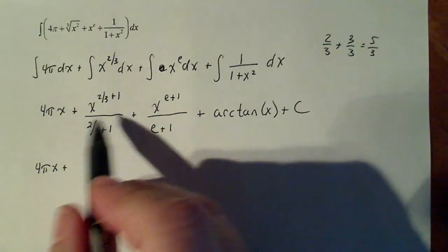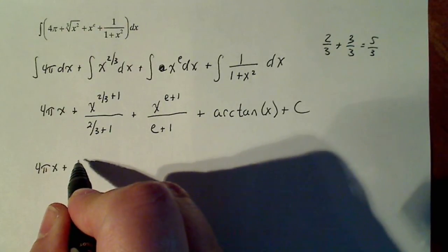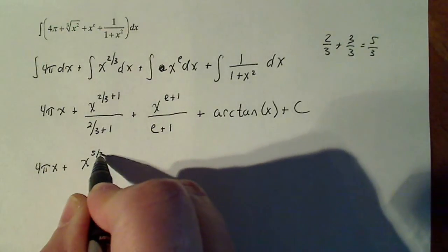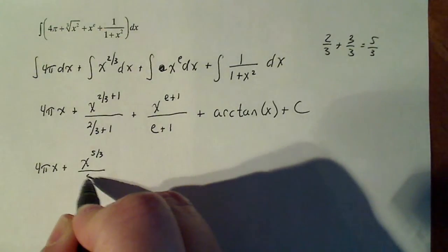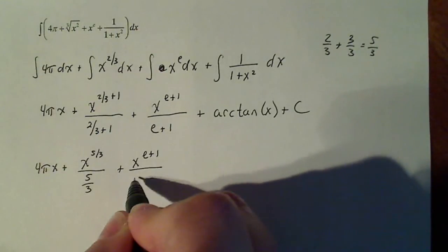So if I simplify this, this becomes x to the five thirds divided by five thirds plus x to the e plus one. There's nothing to simplify there.